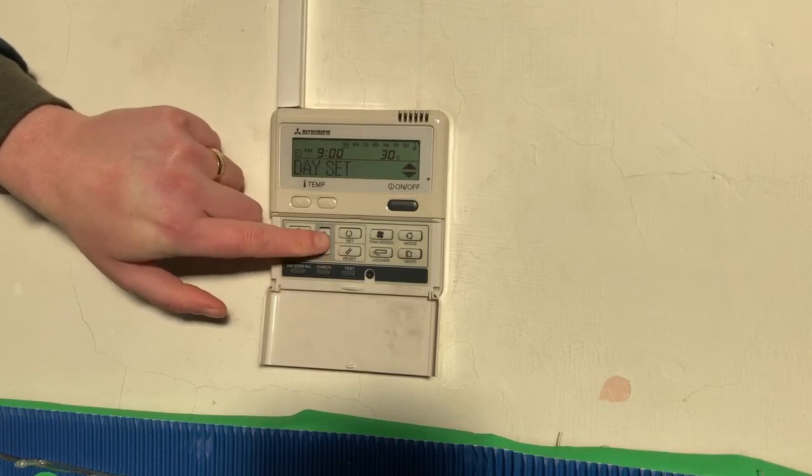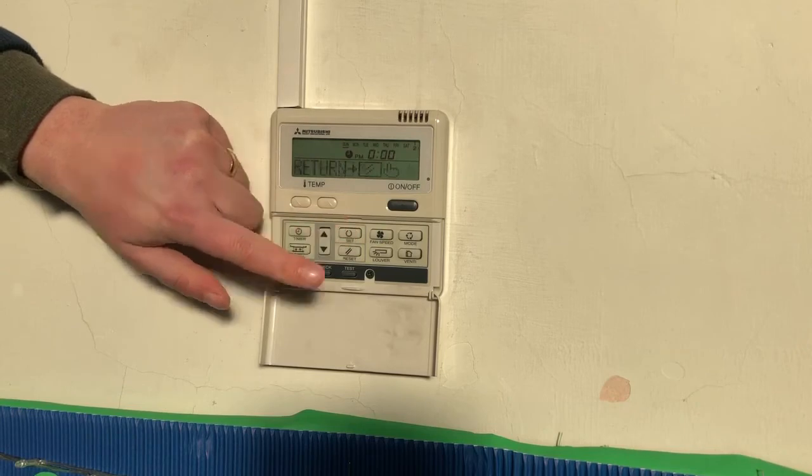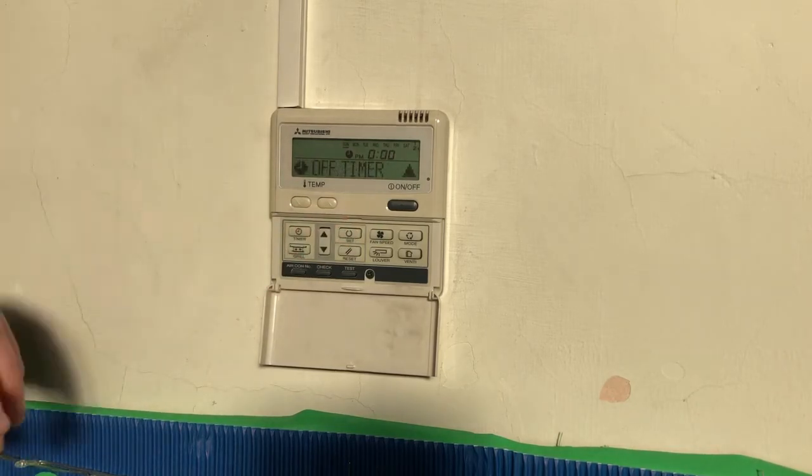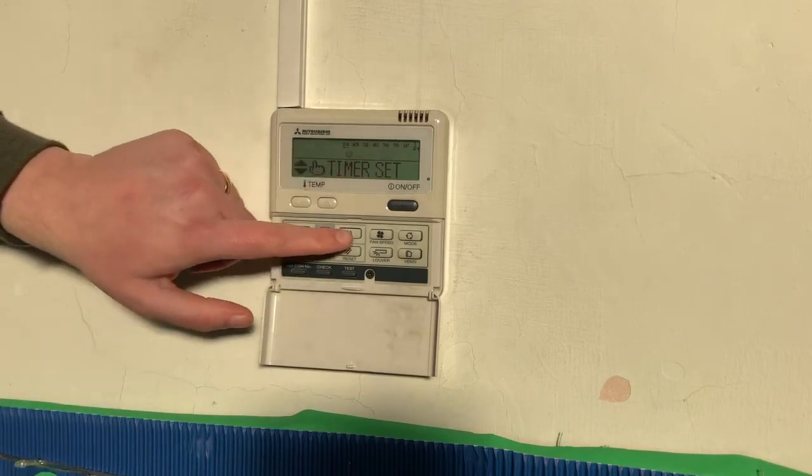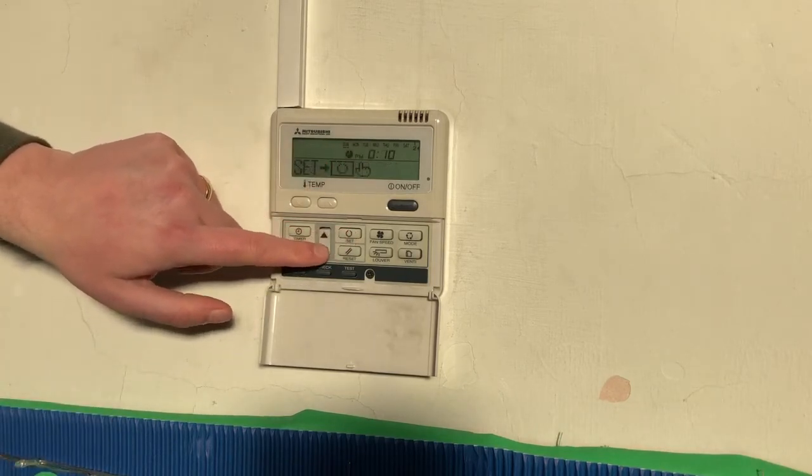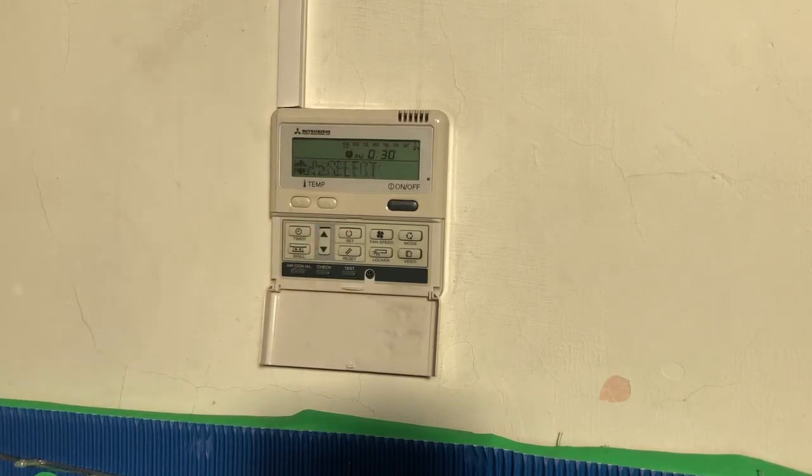So let's say then we want to select number two this time. So now we've got our off timer. So this is when it's going to come off on a Sunday and then we set it to 12 o'clock. Again, you can change that 12:10, 12:20, 12:30, set that timer. And that's when the heaters will come off on a Sunday.